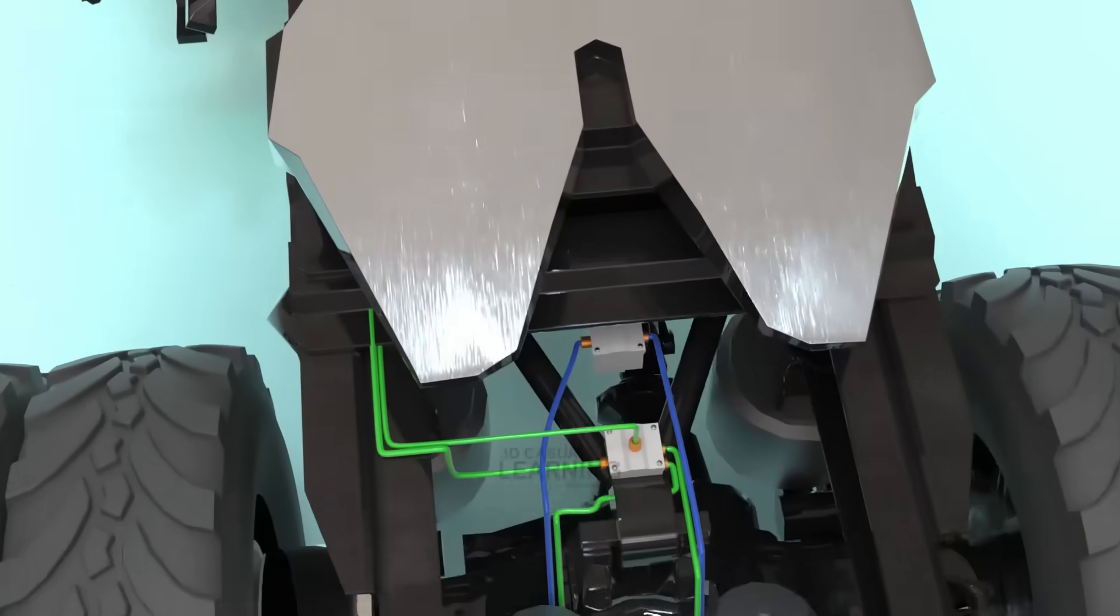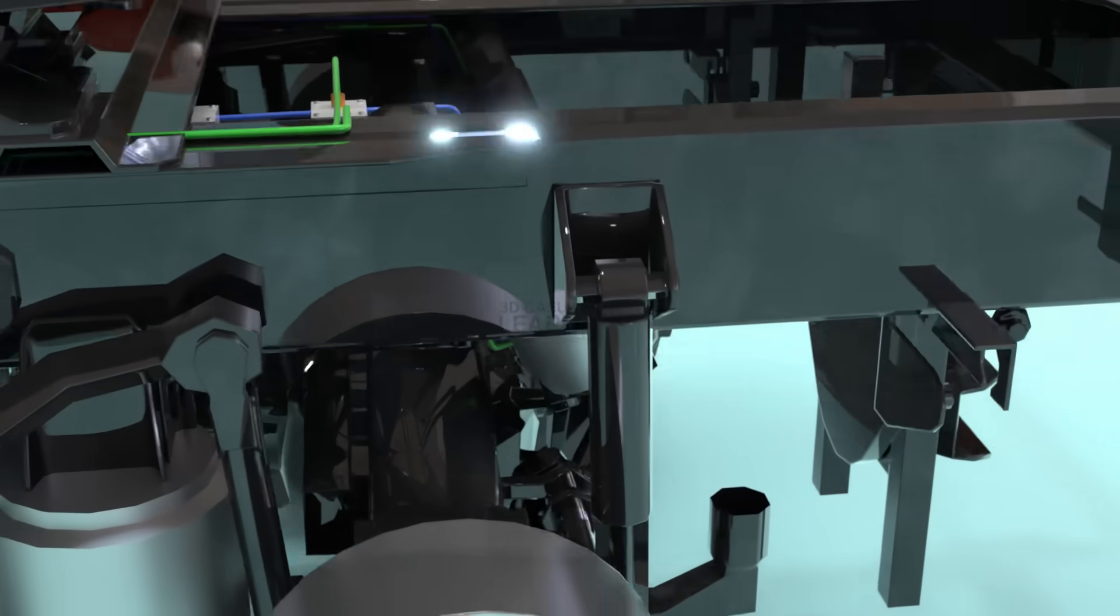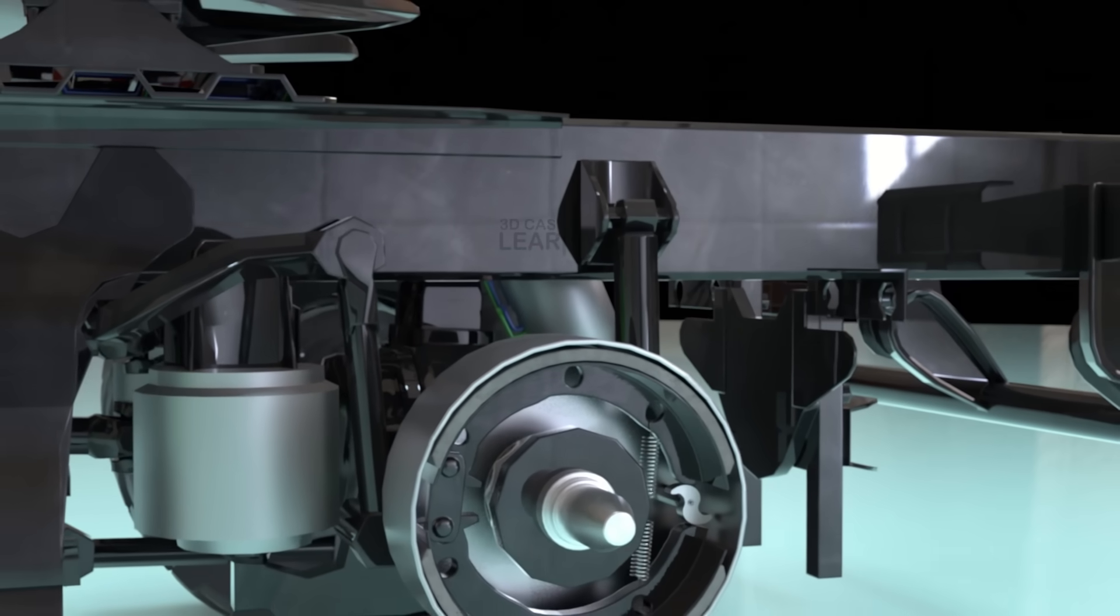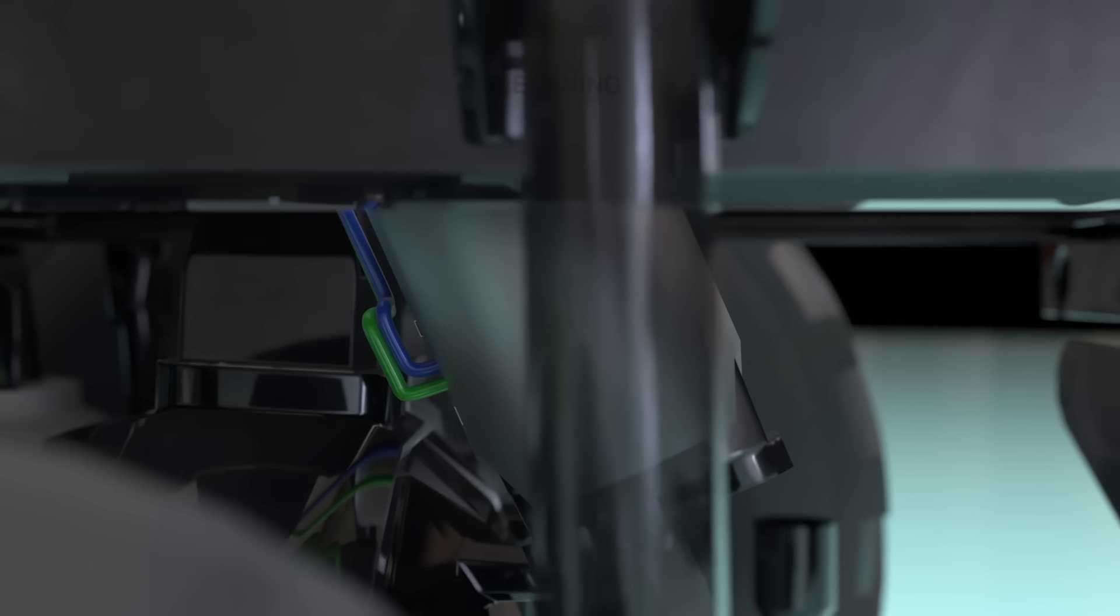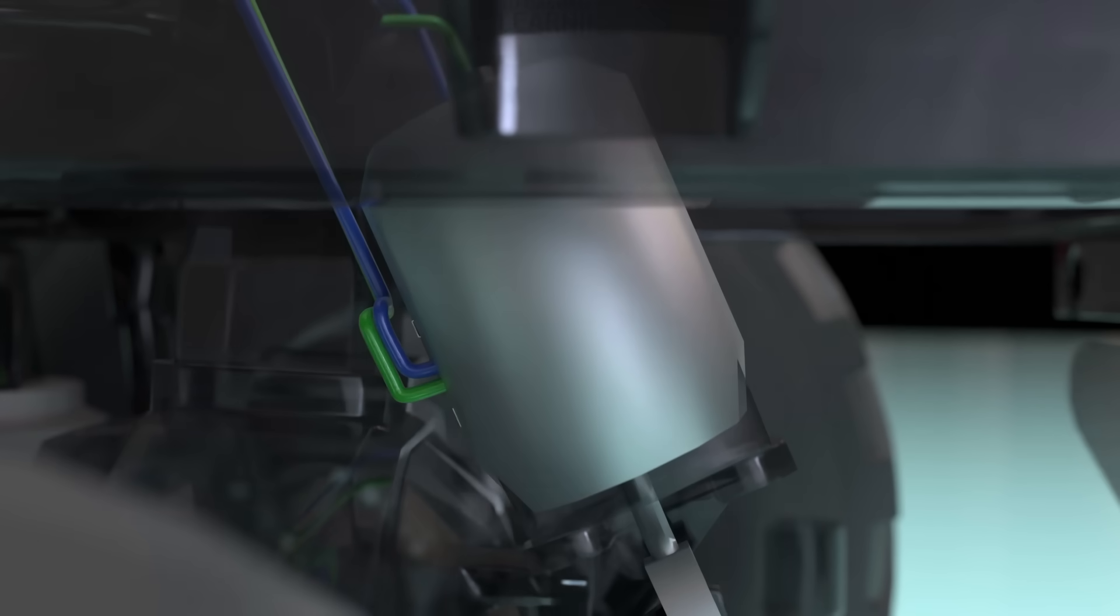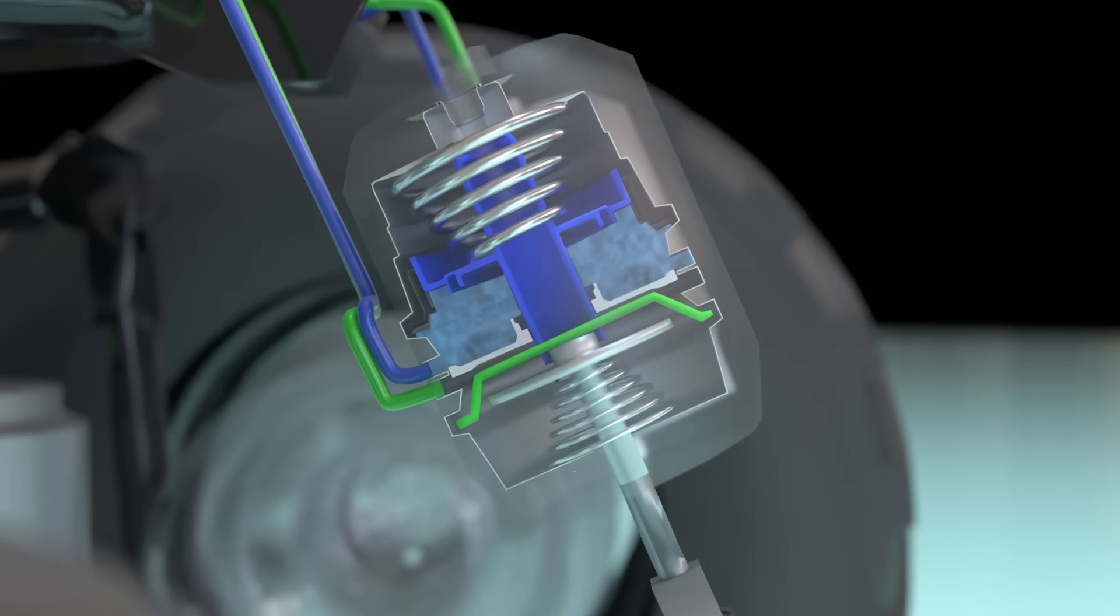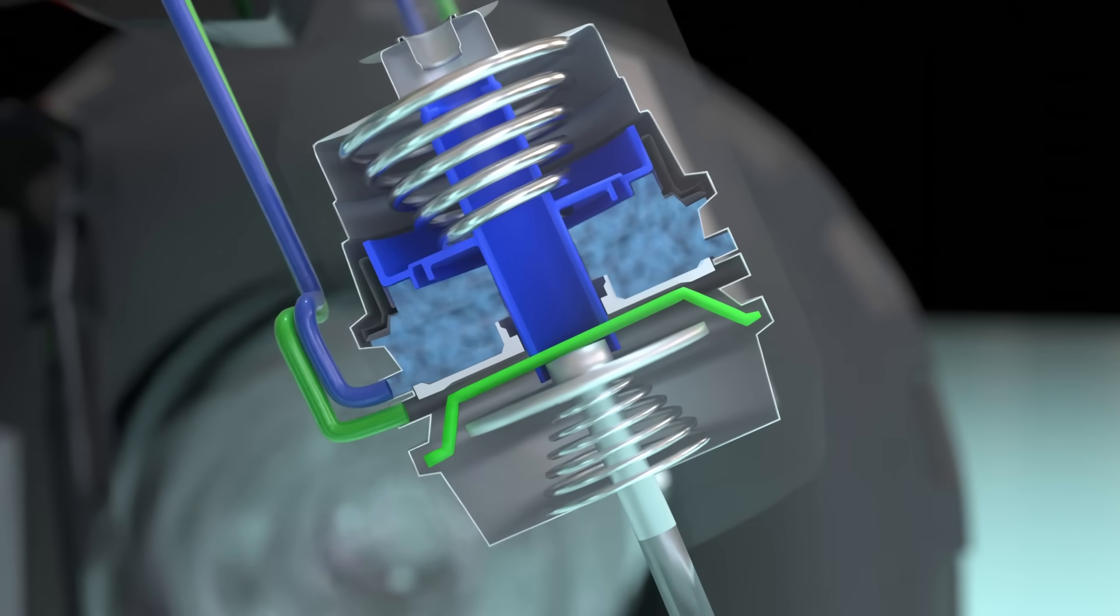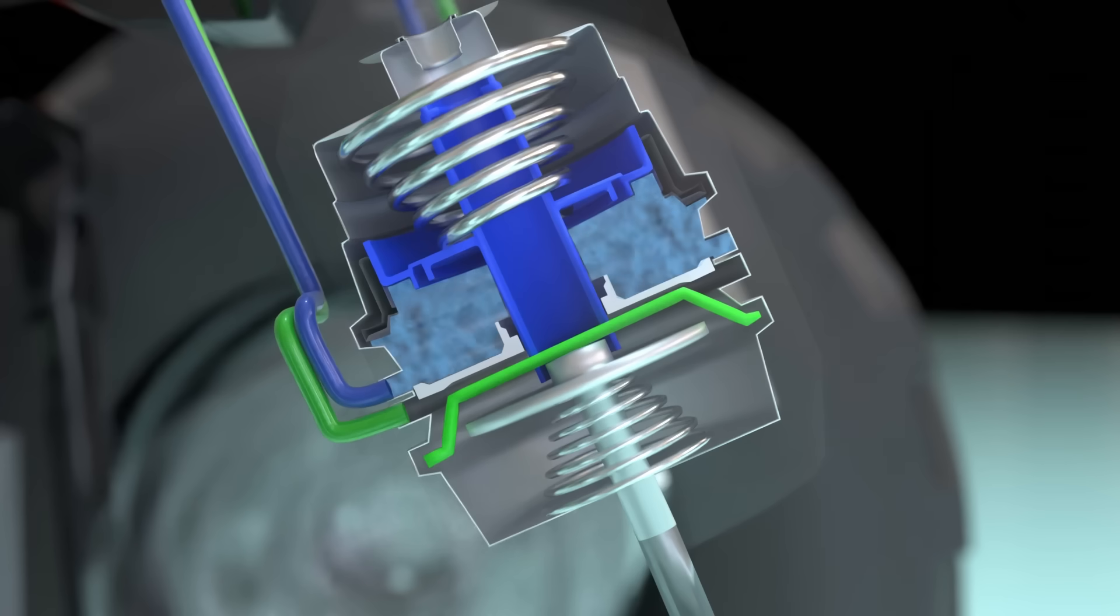While the front axle uses standard service brake chambers, the rear axle is typically equipped with spring brake chambers, which provide both service braking and emergency or parking brake functions. Internally, the service side of a spring brake chamber works like the front chamber. However, a large mechanical spring inside the chamber applies the brake if air pressure is lost, making it fail-safe. We'll cover that in just a moment.